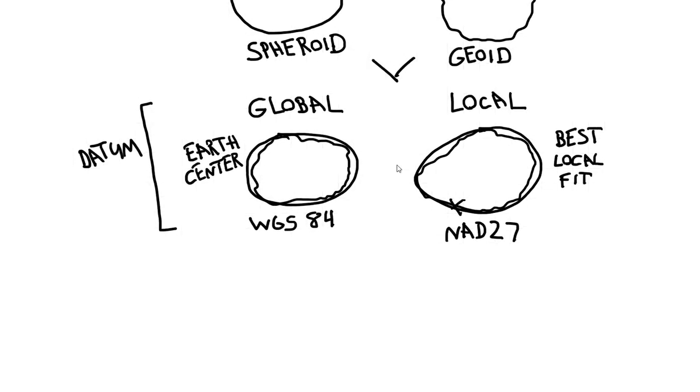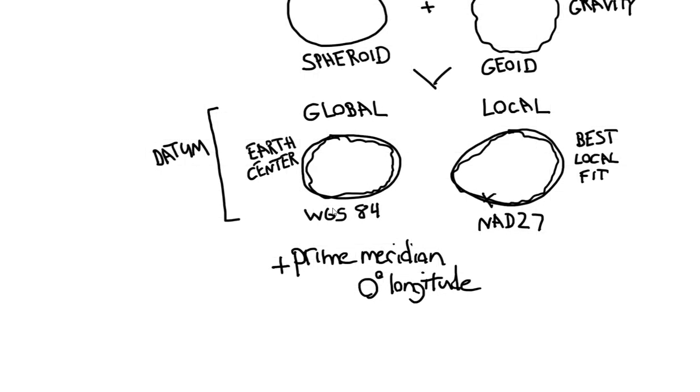So with the addition of one additional parameter, this datum can also be defined as something else. So if you define what that prime meridian is, or the central zero degree of longitude, we now have something called the geographic coordinate system, or many times referred to simply as the GCS. So the GCS is your datum along with that defined meridian. The GCS and the datum are sometimes terms that are used interchangeably.